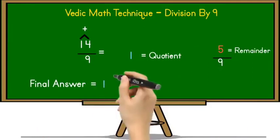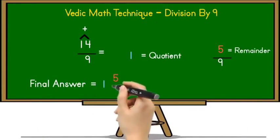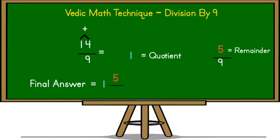So where 1 is the quotient and 5 is the remainder. If we divide 14 by 9, you will get quotient 1 and remainder 5.